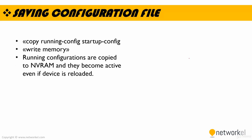After making your configs on the device — changing IP addresses, setting routing protocols, and so on — if you want to save your configuration file, you should use the copy run start command or the write memory command. With these commands, running configurations are copied to NVRAM and they become active even if your device is reloaded. So please don't forget to use these two commands when you make a configuration change and want to save it.